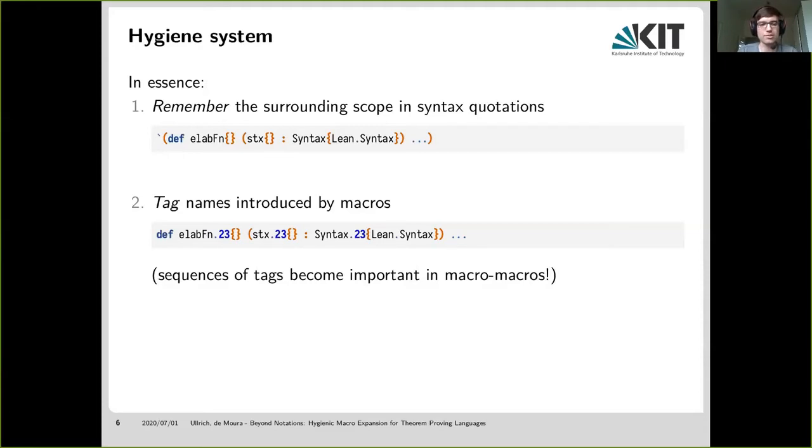And I should also mention that these two steps, they are actually not some primitives in the whole elaboration system, but they are implemented inside the syntax quotations, which are simply another kind of macro. And the code generated from the syntax quotations implements this whole behavior. Okay. So with that, we've remembered all the scoping necessary for implementing hygiene. Now of course, we still have to make use of that.